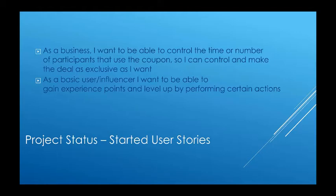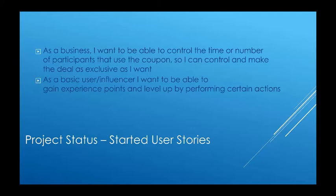We started two user stories that we were not able to finish. We were able to set start and end dates for promos so that users can only see the active promos on the promo page, and businesses can see their current and future promos on the my promos page. We have a limit option started, but the module is not fully updated to Drupal 8, so we were not able to fully get that implemented — they wanted to be able to control how exclusive a deal would be. The second user story we started was the leveling system. Right now users are able to gain points for completing certain actions and we have a threshold for when a user becomes an influencer and would gain some extra permissions, but there are no other levels set up, so that would still need to be implemented.